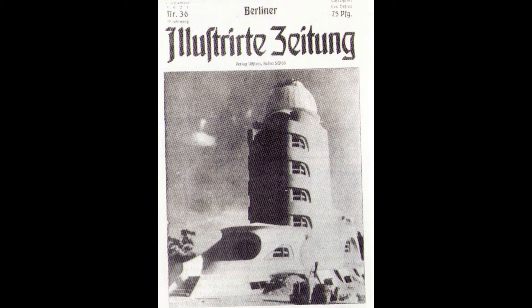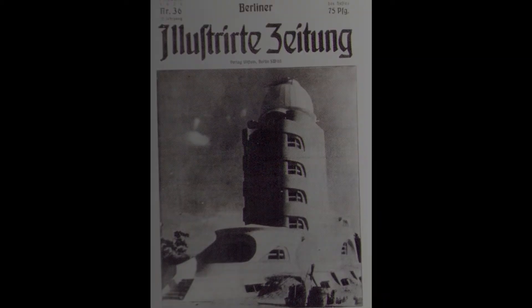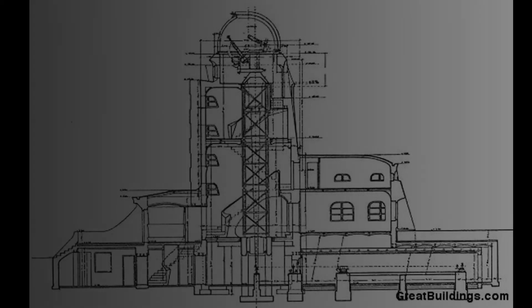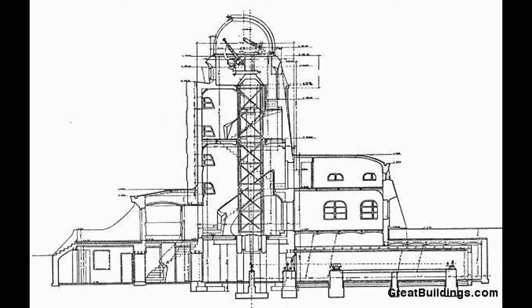It was designed as a research facility for the theory of relativity. Between 1917 and 1920, Mendelssohn made numerous sketches of the facility, attempting to create a dynamic structure which would give form to Einstein's groundbreaking theories.